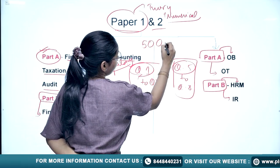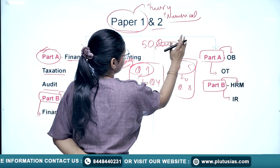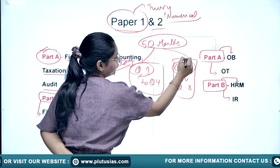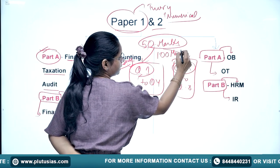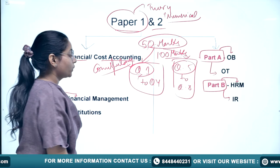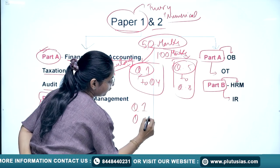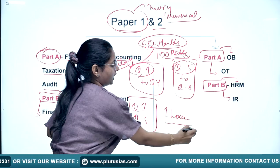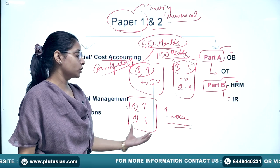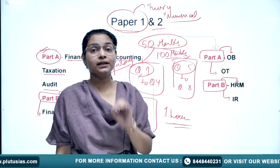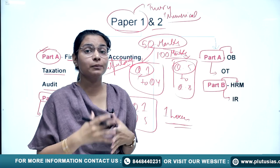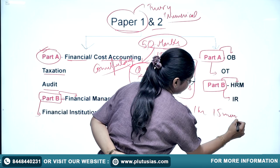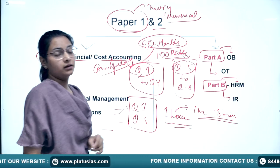Questions 1 and 5 are 50 marks each, meaning together they are 100 marks. While writing the paper, you can decide to attempt questions 1 and 5 first in around 1 hour. If you complete them in 1 hour initially, you will be more confident and will be left with at least 2 hours for the remaining questions.